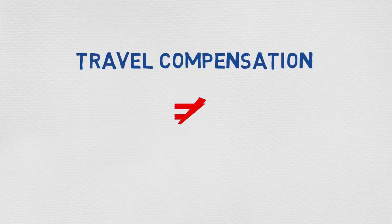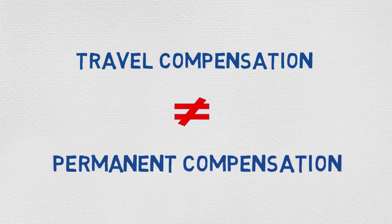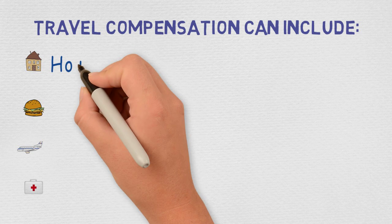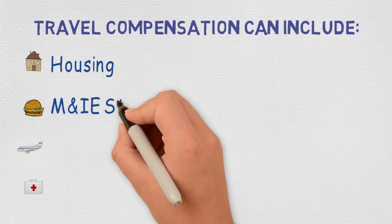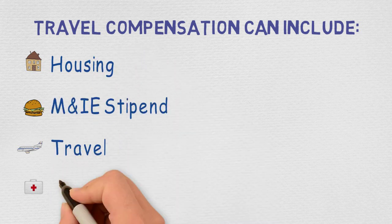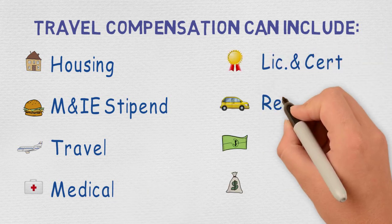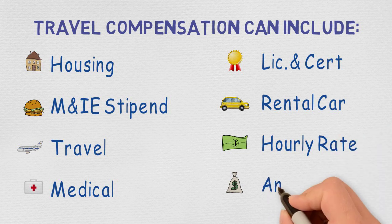This is because the travel compensation package is much different than permanent compensation packages. For example, the travel healthcare compensation package includes housing, meals and incidental expenditure stipends, travel stipends, medical benefits, license and certification reimbursements, rental cars, and hourly rate, and more.